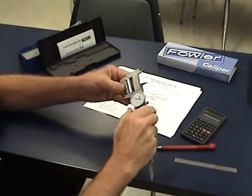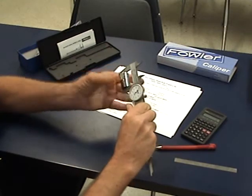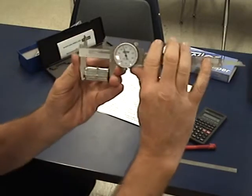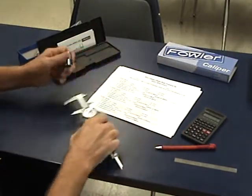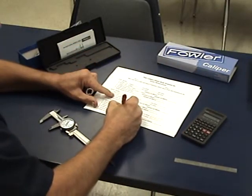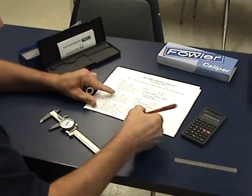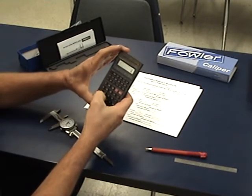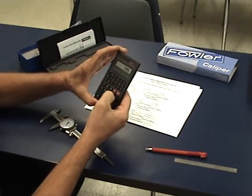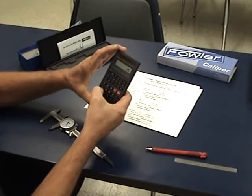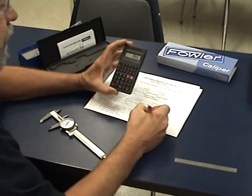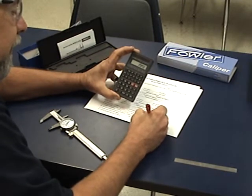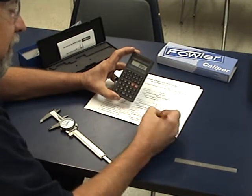Now we're going to measure the length of the socket. And we want to make sure we get it nice and flat, and we're getting one point four nine five. Convert that to metric. Now the way we convert it to metric, we take one point four nine five times twenty-five point four. And we get thirty-seven point nine seven. And we only go two places over is absolutely fine.